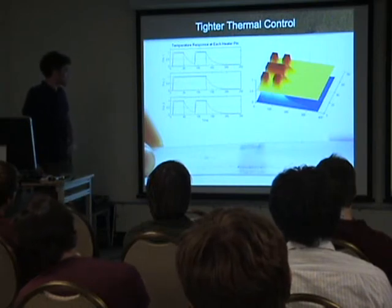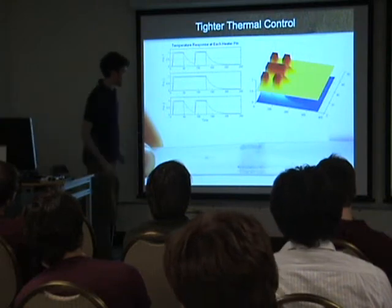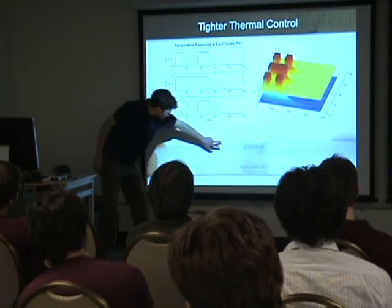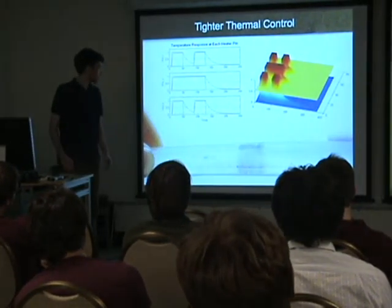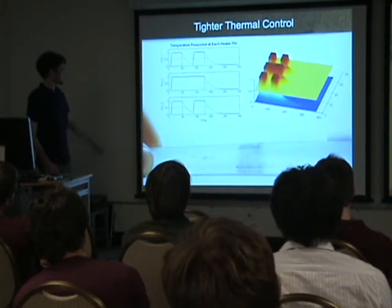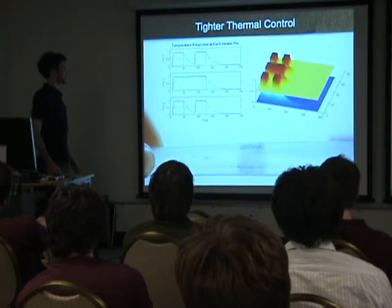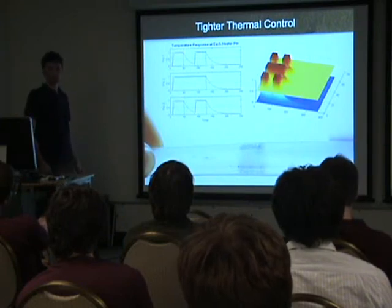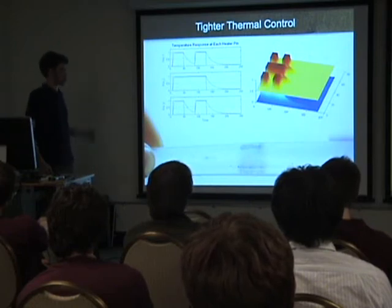Here's our H with the tighter thermal control. You can see we're not getting any bleed-over between the pins — everything is segregated to one side of that extrudate. The point of this graph is to show that we're not exceeding the tolerance values we set on the plastic, so we don't want to burn it. We can control exactly what we want and get a really fast response time on those H heater pins.